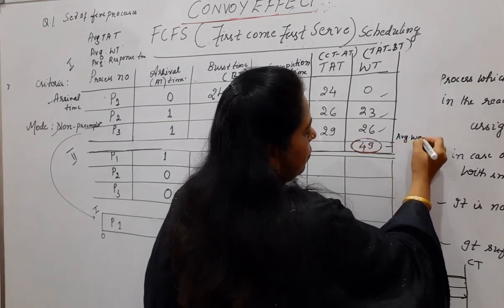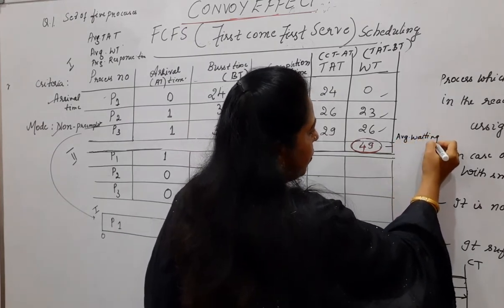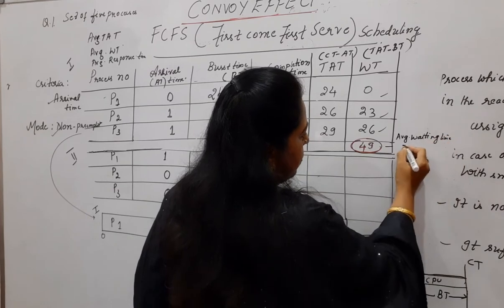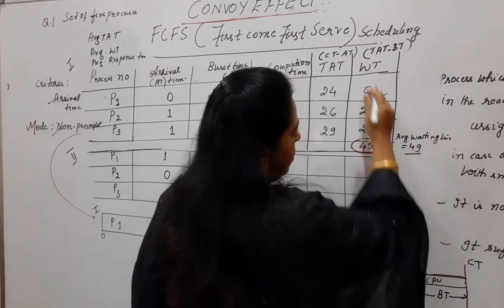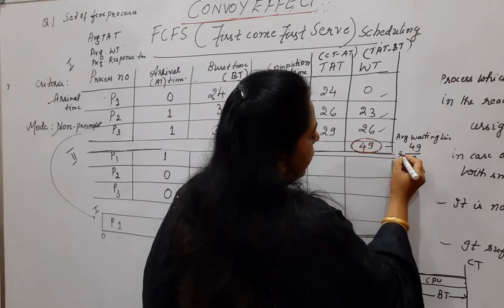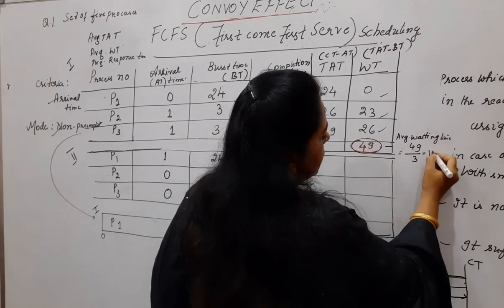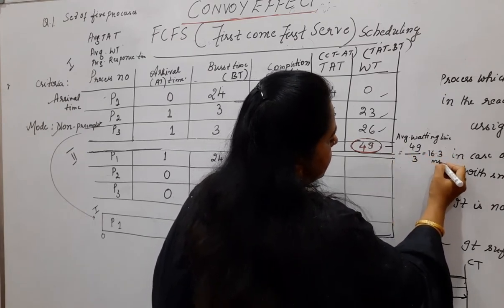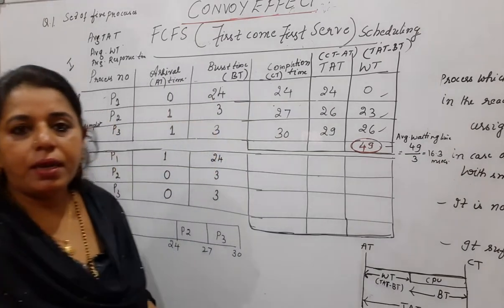Not to get confused with the previous. This value you got here is 49. Now find out the average waiting time. You know the formula. It's very simple. The total value is 49 divided by the total number of processes, 3. So 49 divided by 3 is 16.3 milliseconds. You got the average waiting time as 16.3.